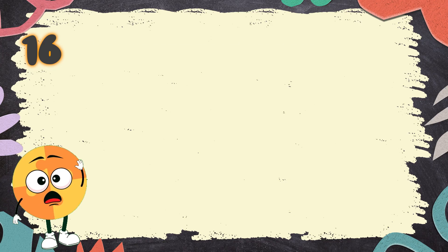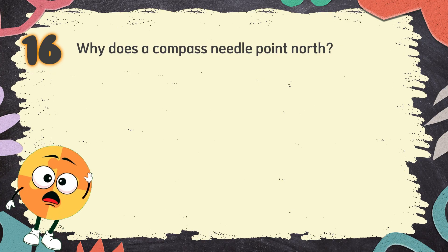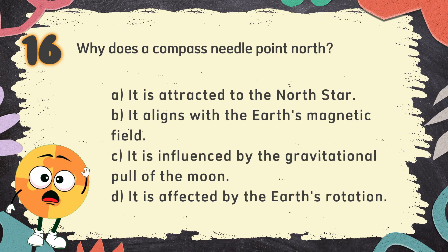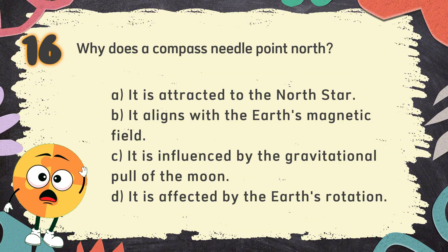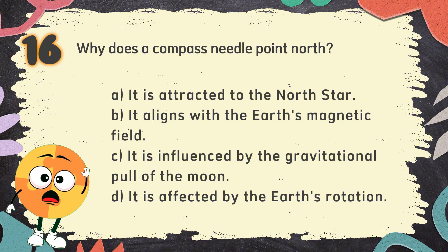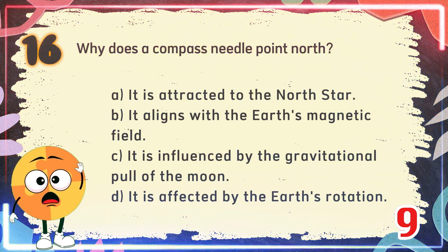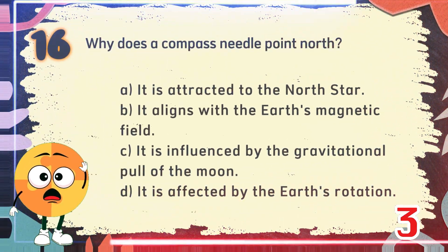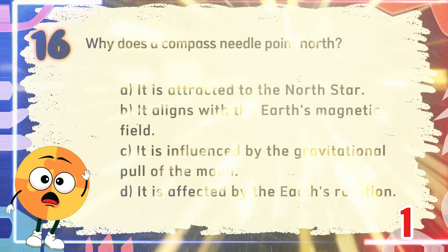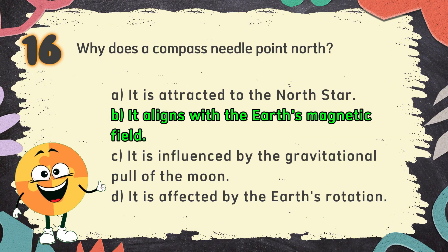Number 16. Why does a compass needle point north? The choices are A. It is attracted to the North Star, B. It aligns with the Earth's magnetic field, C. It is influenced by the gravitational pull of the Moon, D. It is affected by the Earth's rotation. The correct answer is B. It aligns with the Earth's magnetic field.